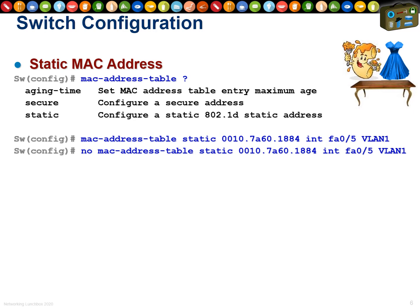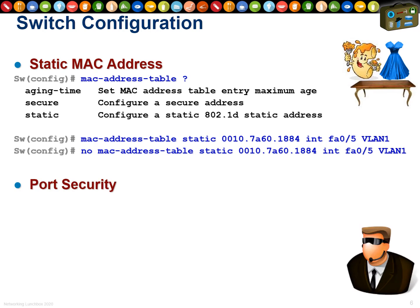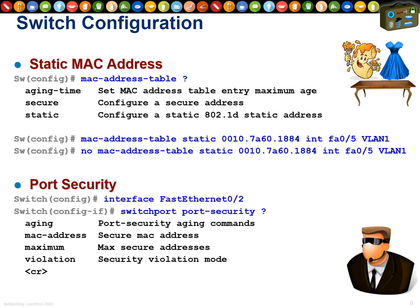To remove a static entry, just put a 'no' in front of the command. 99% of every Cisco switch and router command you'll learn works this way — to remove it, type the same command with 'no' in front. Another tool to limit CAM address starvation is port security, which is one of my favorite setups.